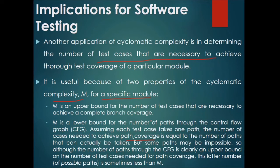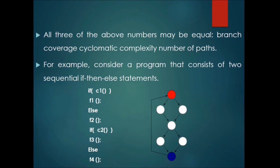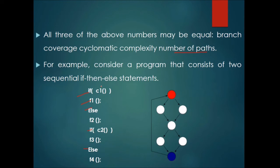Some paths may be impossible, so although the total number of paths through the CFG is clearly an upper bound for test cases needed for path coverage, the number of feasible paths is sometimes less. Consider a program consisting of two sequential if-then-else statements — these three numbers (branch coverage, cyclomatic complexity, and number of paths) may all be equal in some cases.